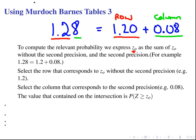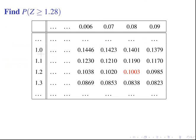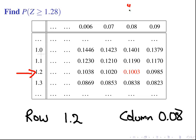So if you want to find the probability of z being greater than 1.28, we pick out the row 1.2 and then the column 0.08. Let me scroll down here a little bit. There we go. So find the probability of z being greater than or equal to 1.28. The row is 1.2, so we pick this row here. And the column is 0.08.